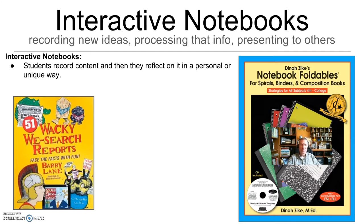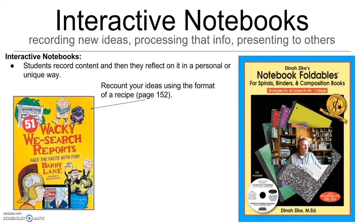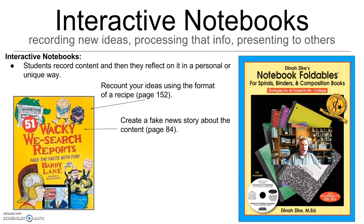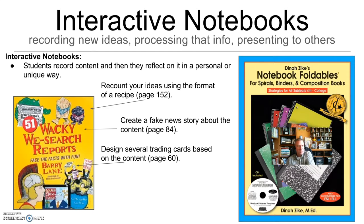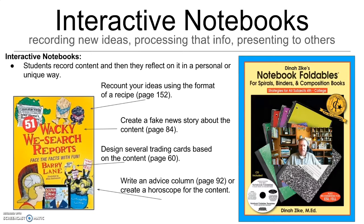There's a great book — '51 Wacky Research Reports' — and one idea in that book is to recall or explain the idea back in the form of a recipe: here are my ingredients, here's how I mix them together. That takes a different and challenging kind of thinking. Maybe you can create a fake news story about the content — in the book it's done as a tabloid news story, but maybe it could become a serious news story too. My students like to create trading cards like baseball cards or Pokemon cards with stats on the back — it's a great thing to put in an interactive notebook showing personal reflection by capturing information in stats. And write an advice column, Dear Abby style. I also launched the idea: what if there was a horoscope for all the generals of the Civil War? That's not in the book, but the ideas inspire new ideas.